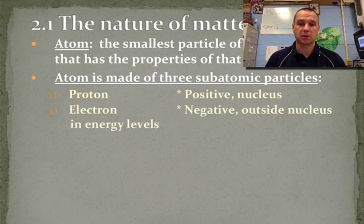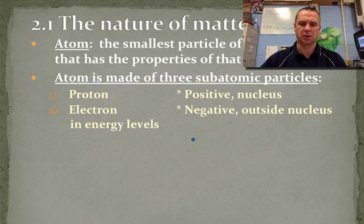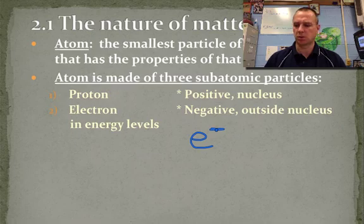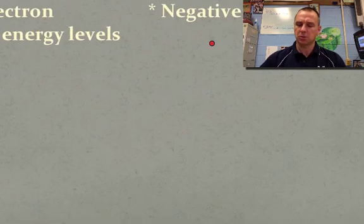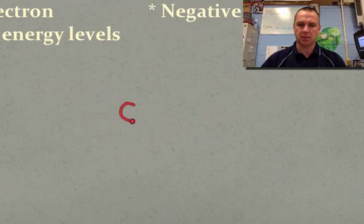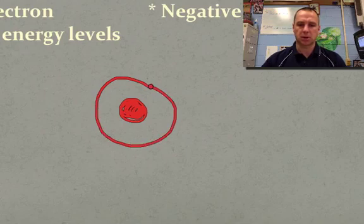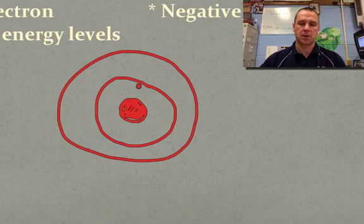Electrons are negatively charged, and they're found outside the atom, often in an electron cloud or energy level. And we write those as an E with a minus on them to show they have a negative sign.